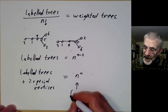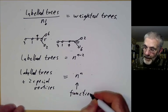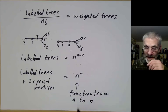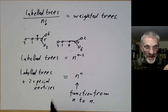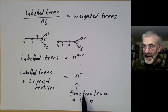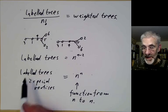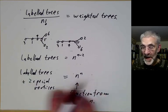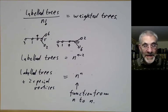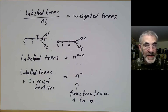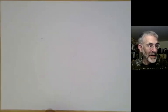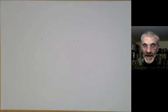Now n to the n is the number of functions from an n-point set to an n-point set. So we've got two collections of objects: functions from n points to itself, and labeled trees with two vertices. The numbers of these two sets should be the same. It's an absolutely fundamental idea in combinatorics that if two sets have the same size, you should try and find a natural bijection between them. This is what we're going to do for Cayley's formula.